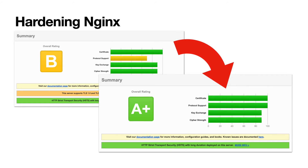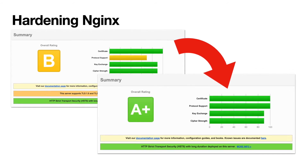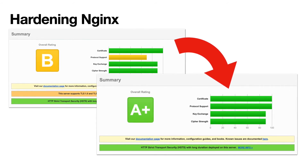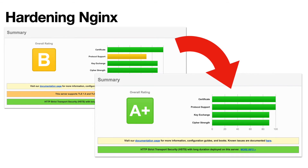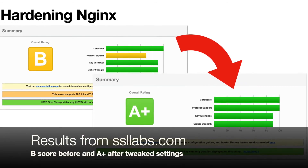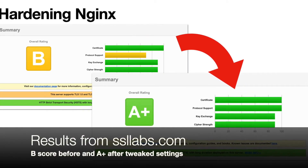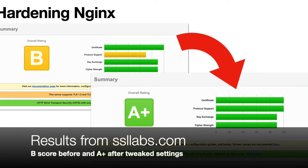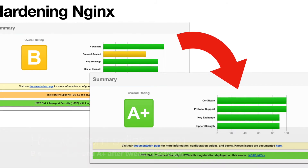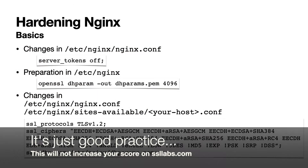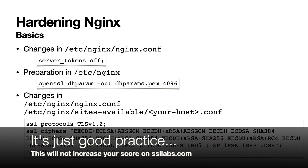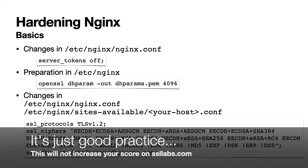By default, the nginx configuration and the Jitsi virtual host configuration get a B-score when you test your Jitsi domain with SSLLabs.com. Let's improve this with a few simple steps. First off, set server_tokens to off in the nginx.conf to hide the exact version number of the web server.